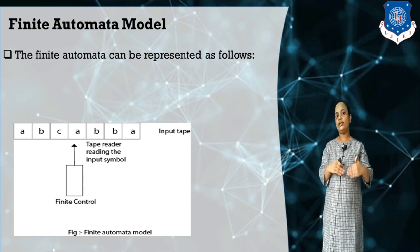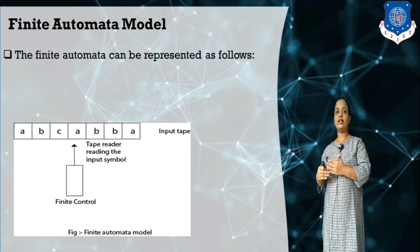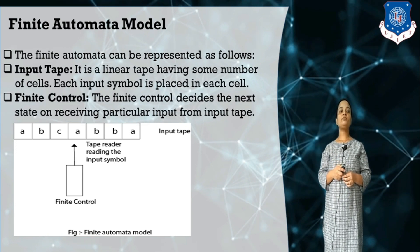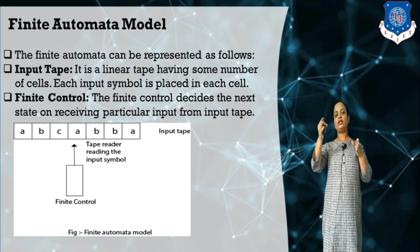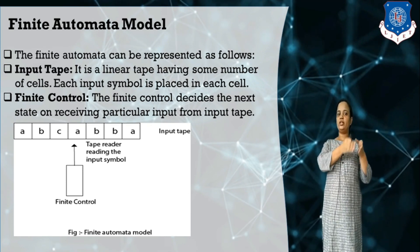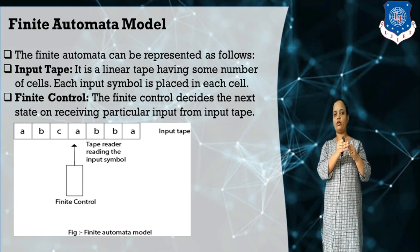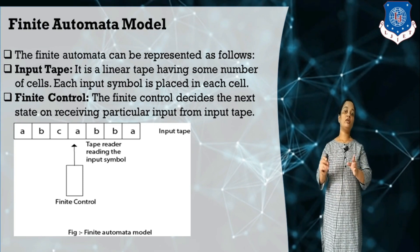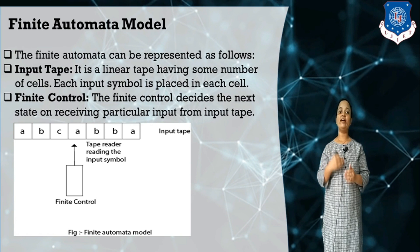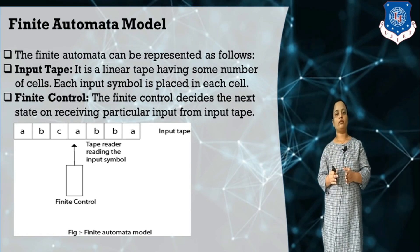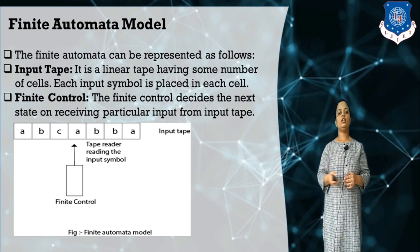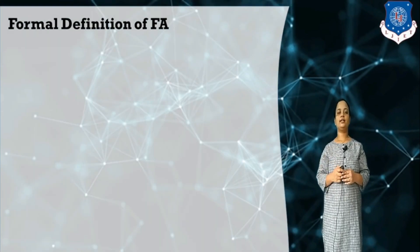The finite control moves from one state to another state, or maybe stays in the same state, by reading the input symbol. It starts reading the input symbols from left to right. The input tape is divided into a number of cells where each cell contains one symbol. So the finite automata model contains two components: the input tape, which contains the input stream, and the finite control, which contains the set of states that change according to the input.